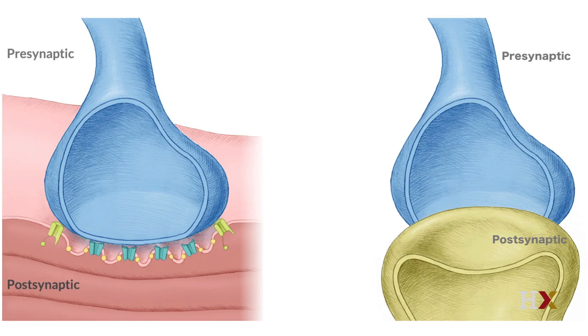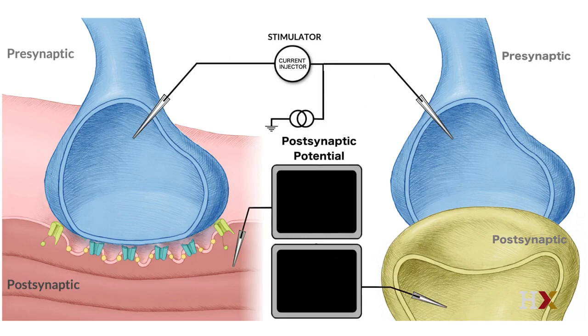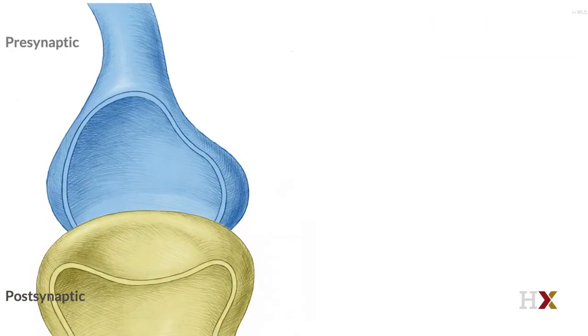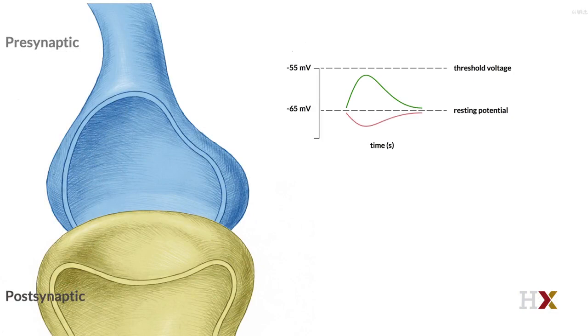In general, the response of the postsynaptic neuron is termed a postsynaptic potential. We can classify different postsynaptic potentials into several categories. Either excitatory, meaning that the neuron is more likely to fire because it's closer to threshold, or inhibitory, where the received signal makes the neuron less likely to fire.